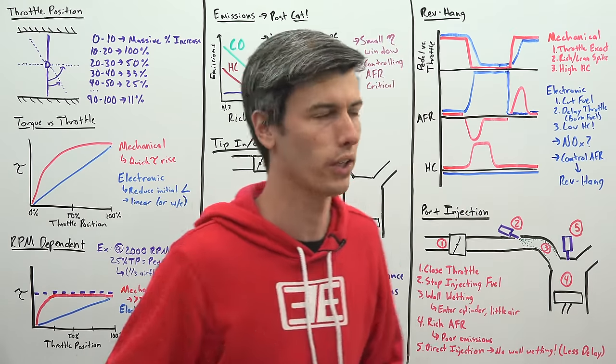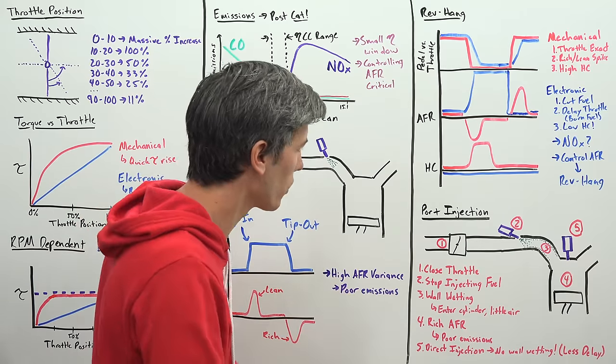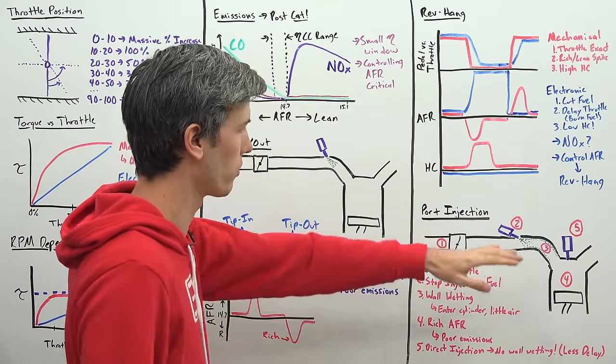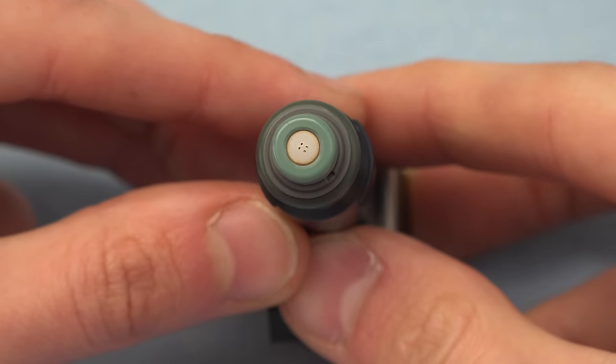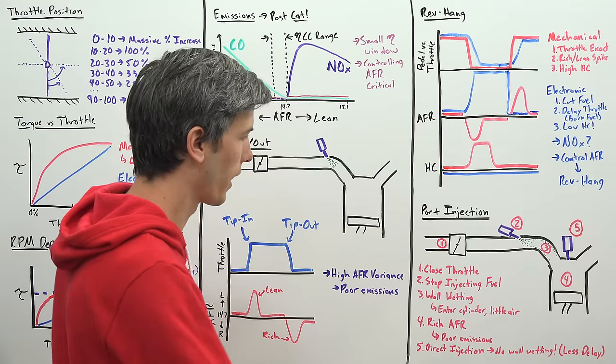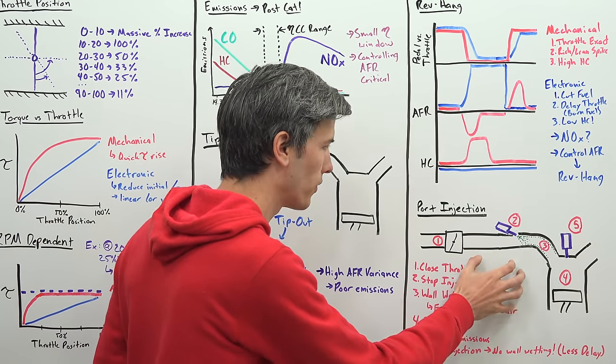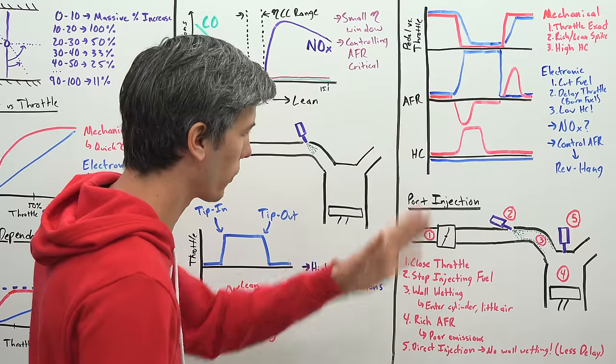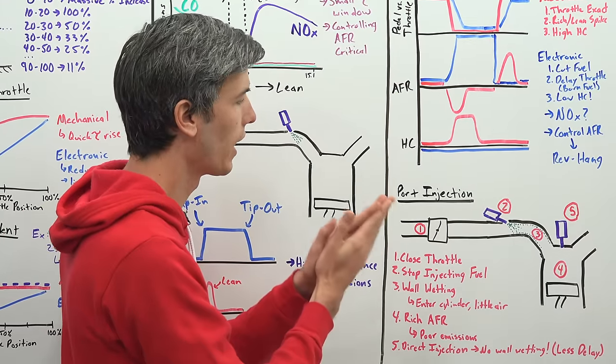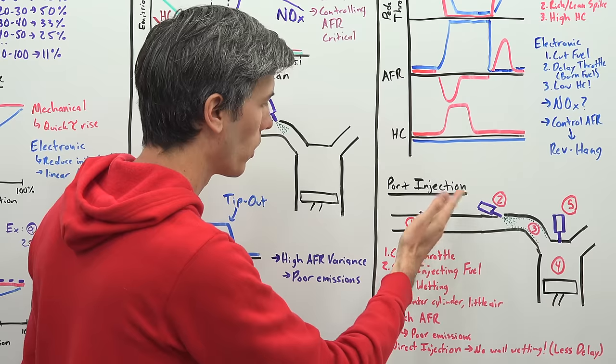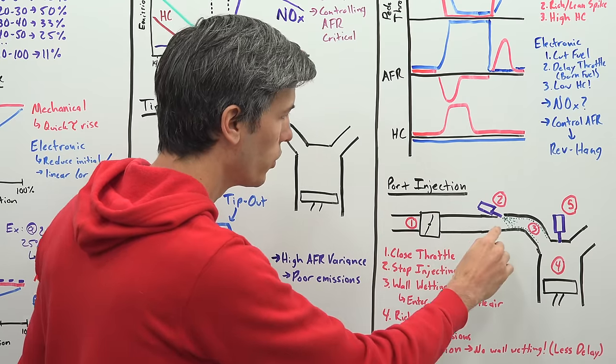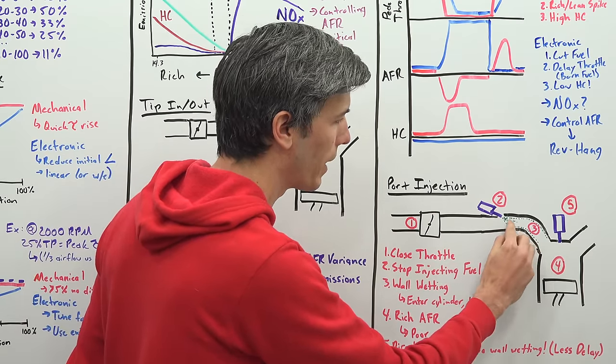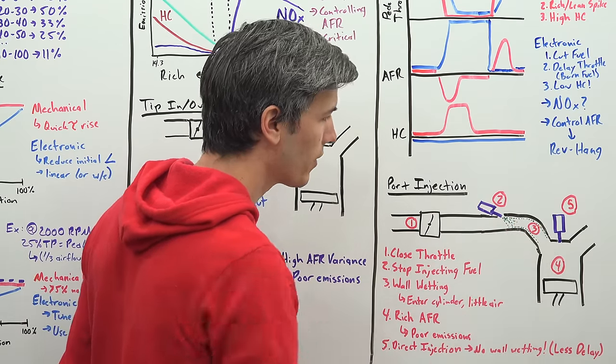And one of the unique challenges still existing with modern transmissions, modern manual transmission vehicles is when they are matched with engines using port injection. And so what happens is a process where you have wall wetting. So for example, let's say you're shifting gears and you let off the throttle to shift gears. Well, as that throttle closes, you still have some fuel remaining on the walls of that intake port.